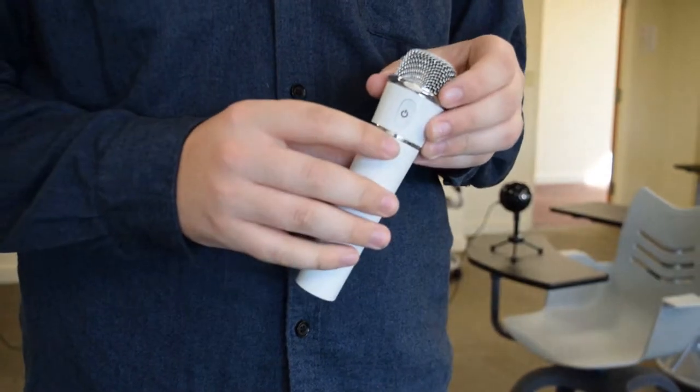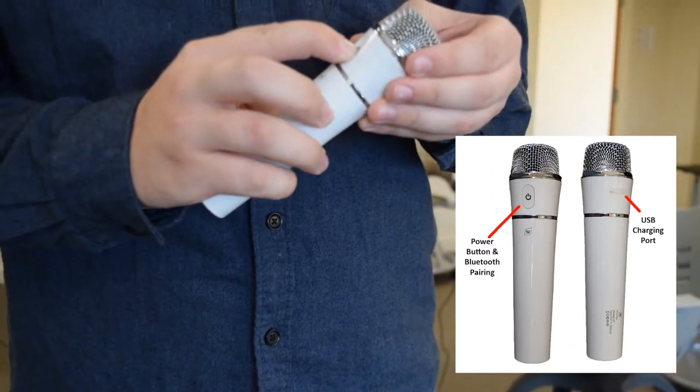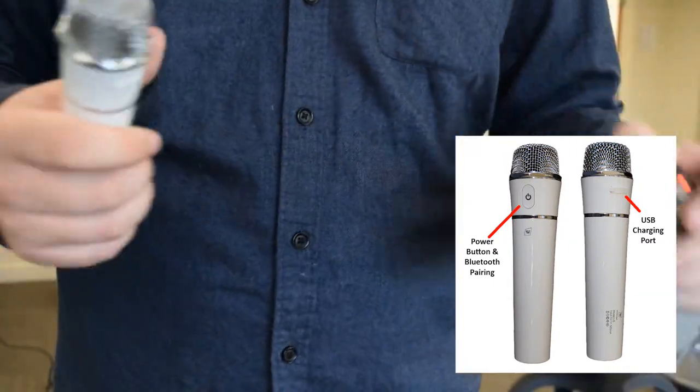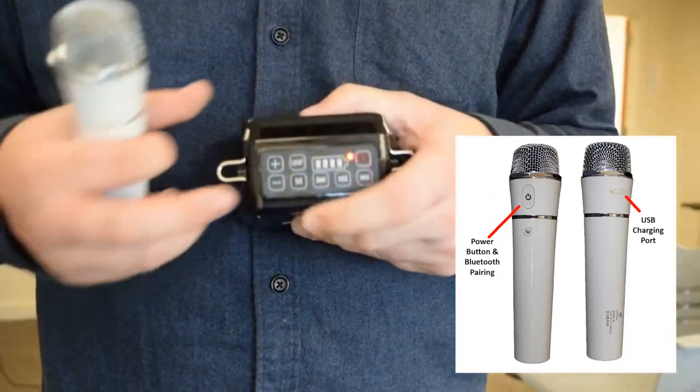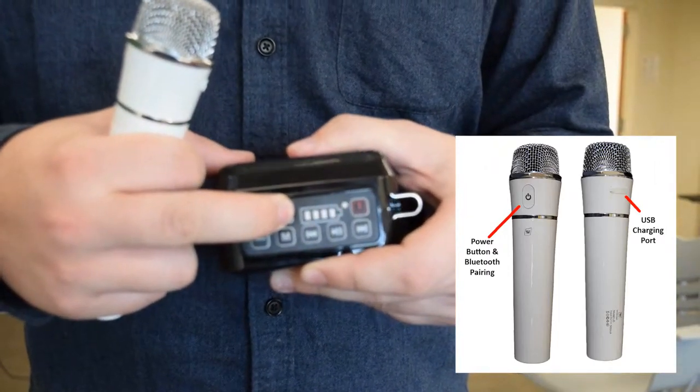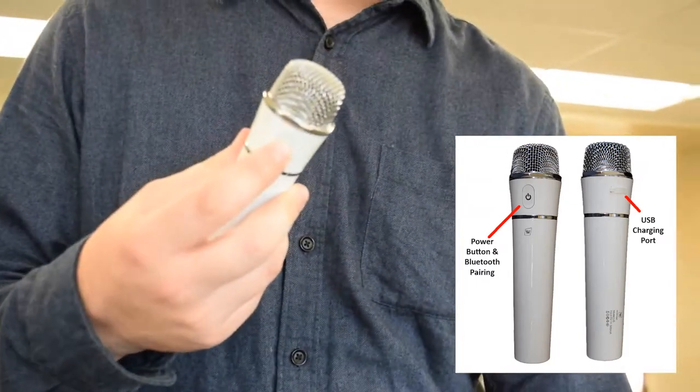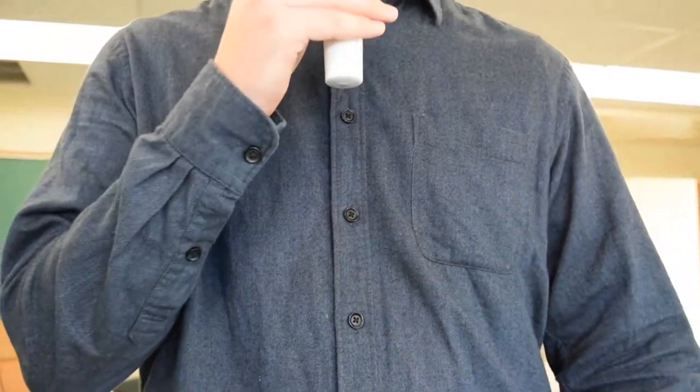Similarly, you can pair the handheld mic. To do this, hold down the power button until it turns blue. Then like before, hold down the UHF button until it begins flashing. Now triple click on the power button. It is now paired. You can hear my voice as I talk through the amplifier. Now you're able to use both microphones at the same time through the voice amplifier.